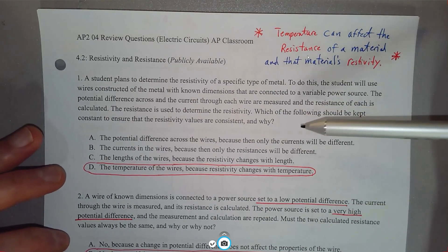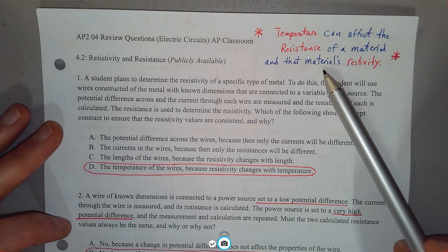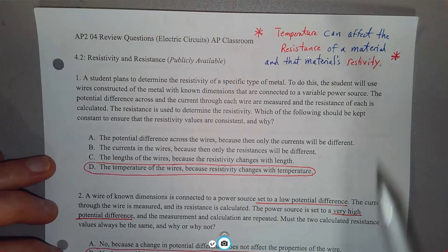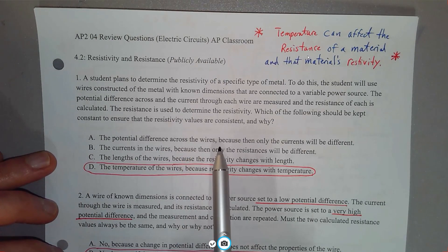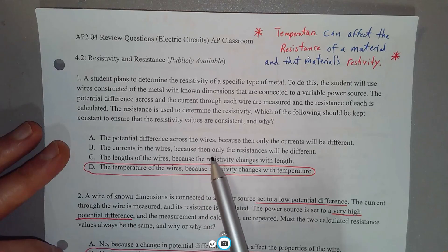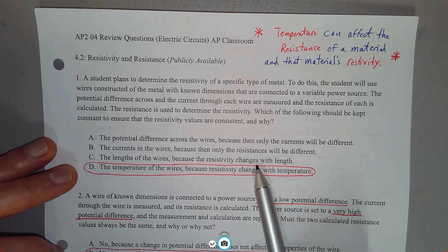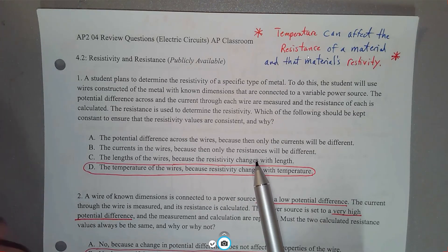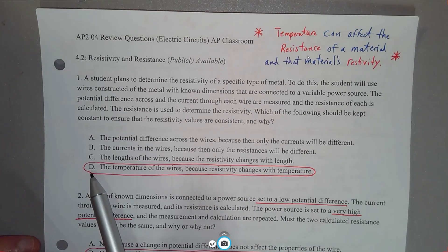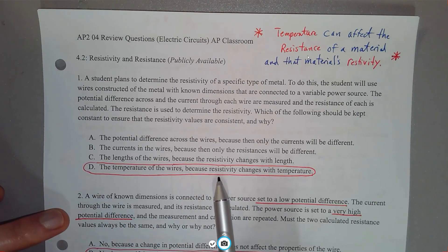Which of the following should be kept constant to ensure that the resistivity values are consistent, and why? This question deals with the idea that temperature can affect the resistance of a material and therefore that material's resistivity. Choice C says the length of the wires because resistivity changes with length — that's not true. Resistivity is constant for a material regardless of length or surface area. The correct answer is that the temperature of the wires must be kept constant, because resistivity can change with temperature.